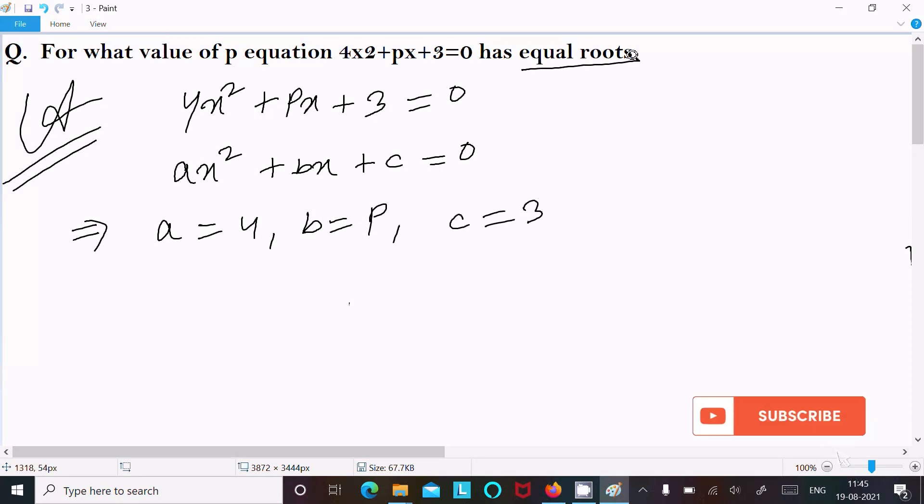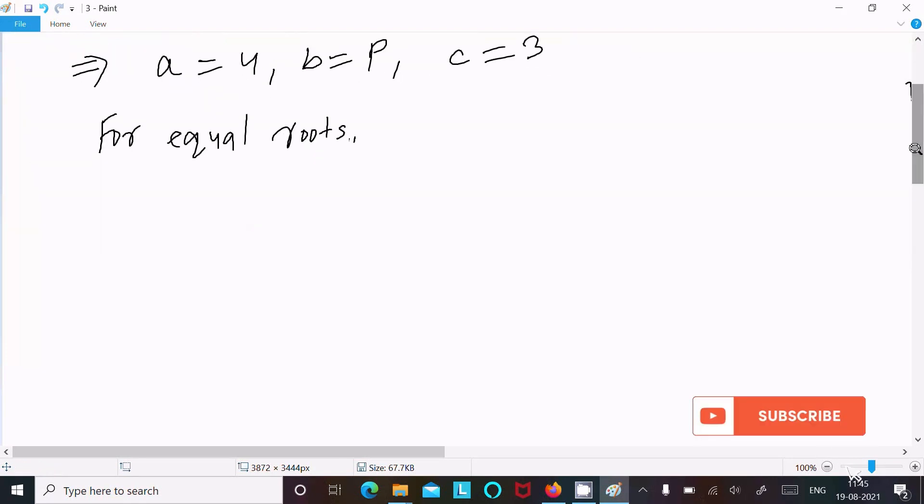For equal roots, the discriminant D = 0, or we can write b² - 4ac = 0.